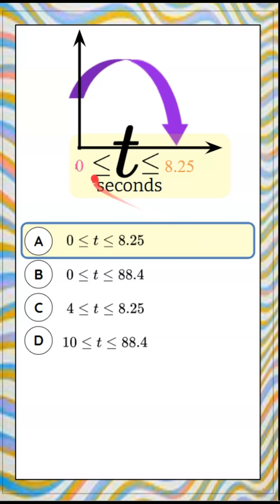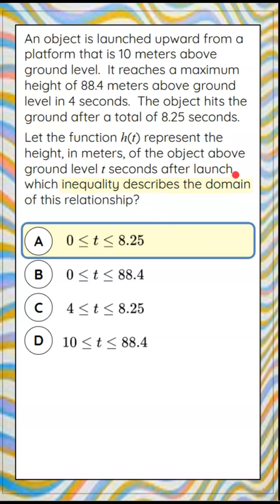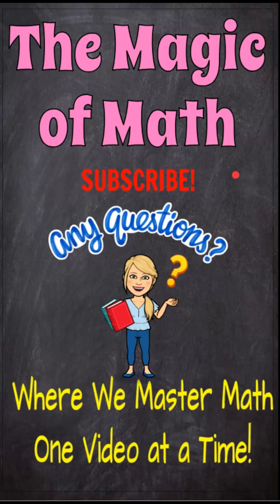This compound inequality represents our domain, or our time, of the path of the object. And there you have it. That's the magic of math, where we master math, one video at a time.